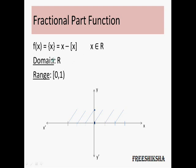Next is the fractional part function. As the name suggests, it gives the fractional part of any value. If x is 2.5, the fractional part is 0.5, which equals 2.5 minus the greatest integer of x, that is 2. Its graph runs from 0 to 1 — the range — where 0 is included with a square bracket and 1 is excluded with a round bracket. For an integral value like 3, the fractional part is 3 minus 3 equals 0. Just before 3, say 2.9999, it approaches 1, but at the integer 3 it falls back to 0. This process continues, giving the characteristic sawtooth graph.